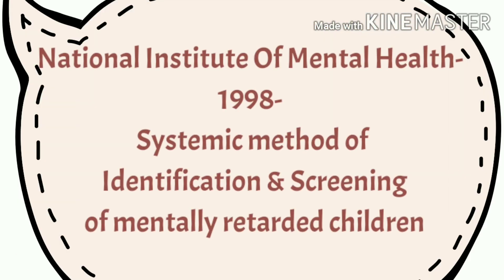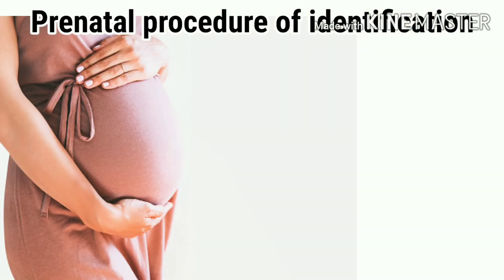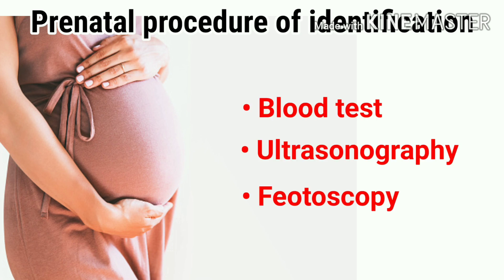The National Institute of Mental Health in 1998 developed a systemic method of identification and screening of mentally retarded children. Prenatal procedures of identification include: blood tests for detecting anemia, syphilis, and neural tube defects; and ultrasonography, done in the second trimester of pregnancy for detecting certain disorders such as hydrocephaly or microcephaly.